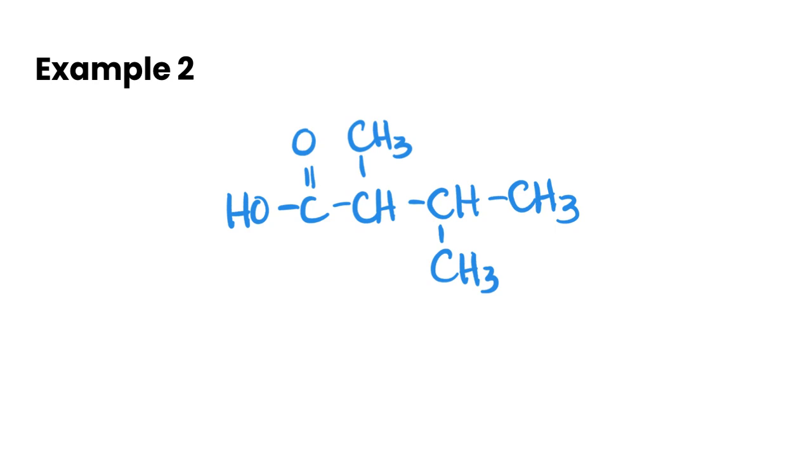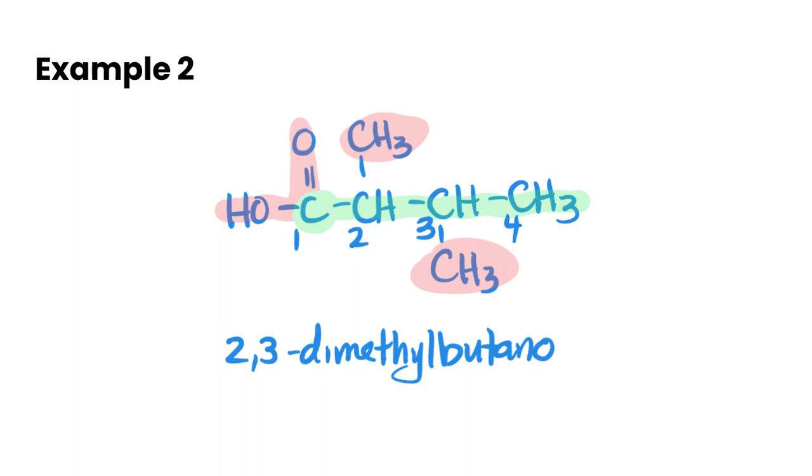One more example here - we again have a carboxylic acid because we're recognizing our functional group. We need to include this carbon in the main chain, so we're going to go one, two, three, four. And it didn't matter if we went up or down there. So we also have a couple of methyl groups attached here, and we are going to need to number and name those. Numbering our main carbon chain, we start with the carboxyl group - so one, two, three, and four - which means we have two and three methyl groups. So we're going to go 2,3-dimethylbutanoic acid.